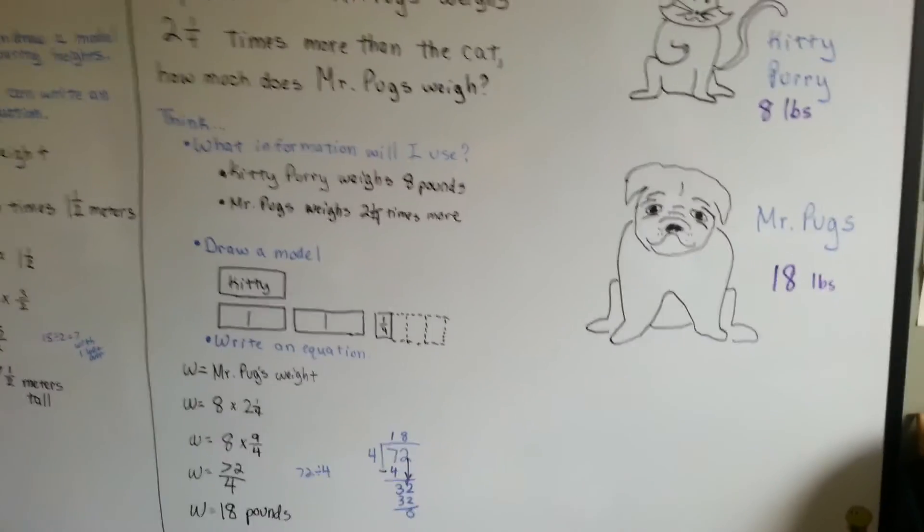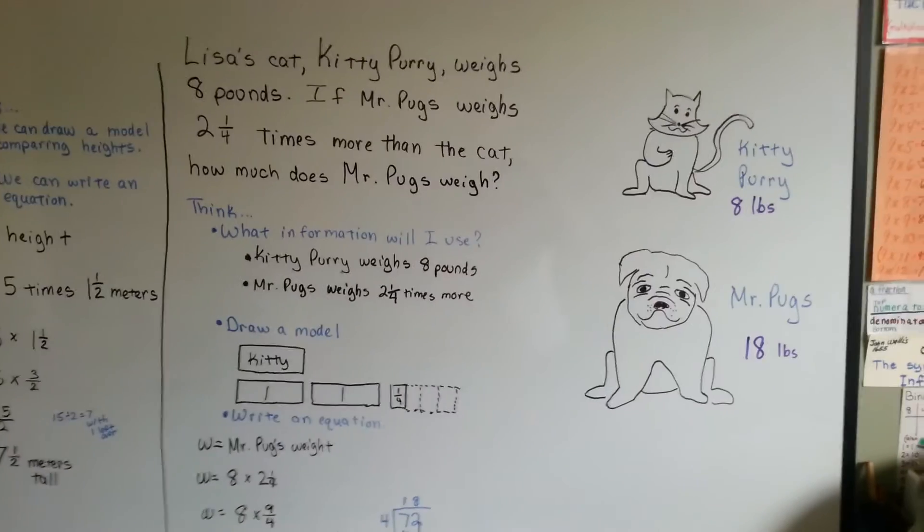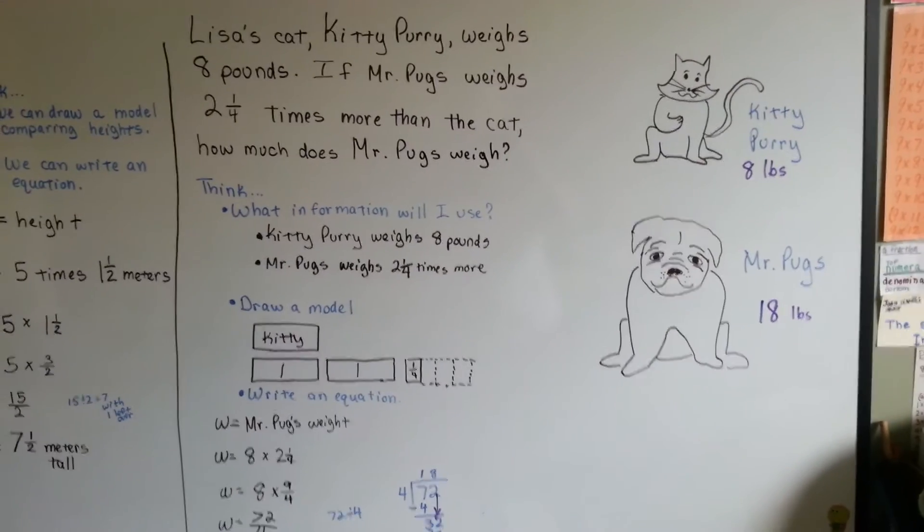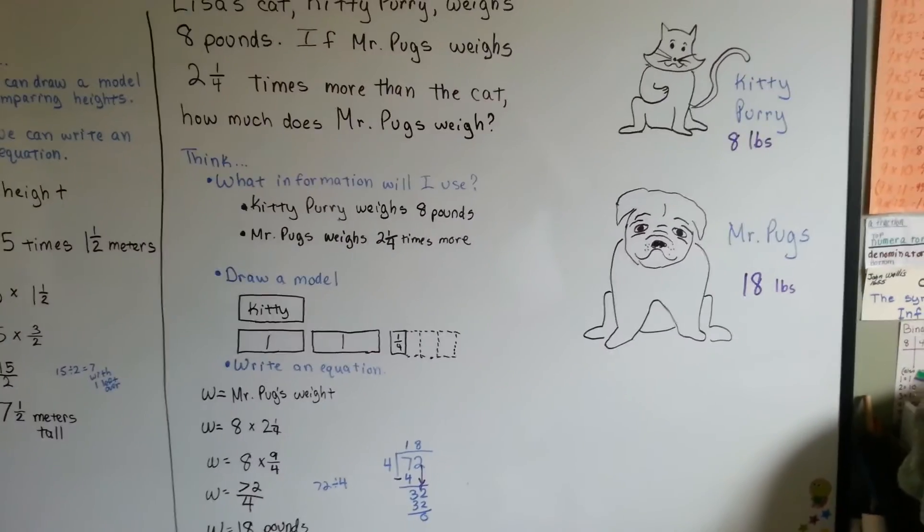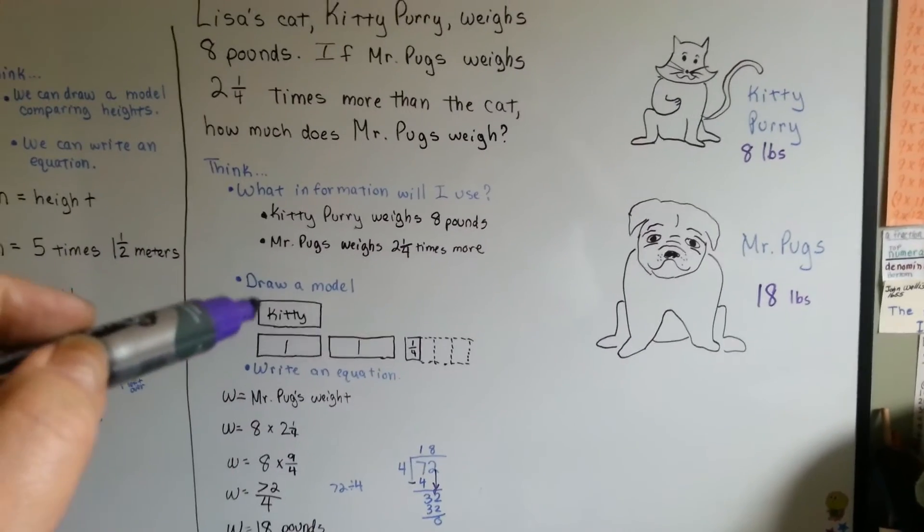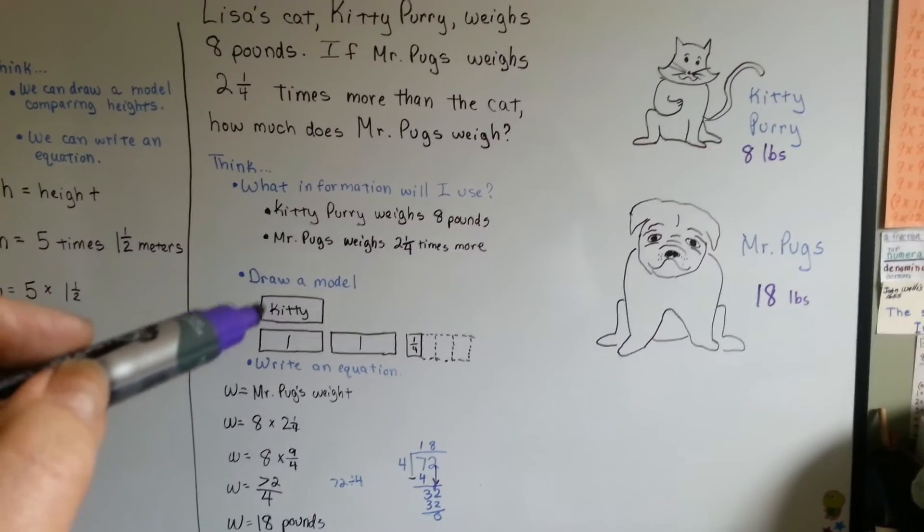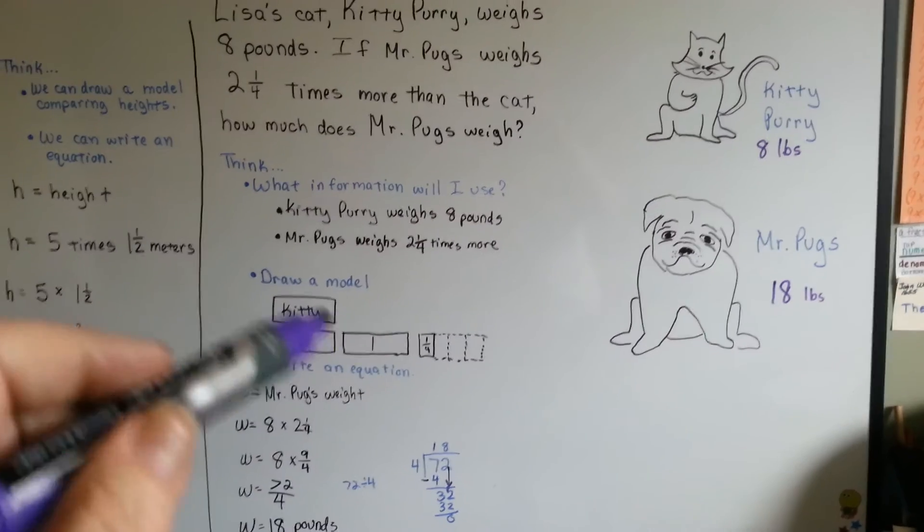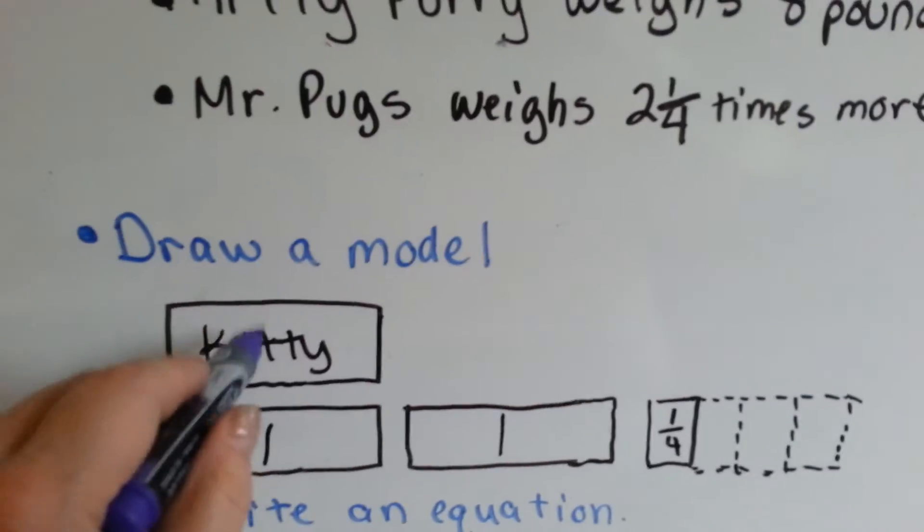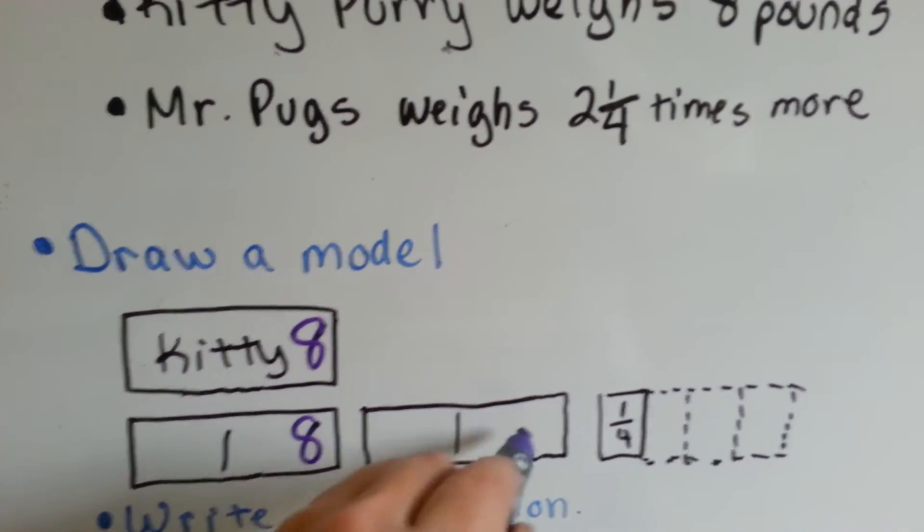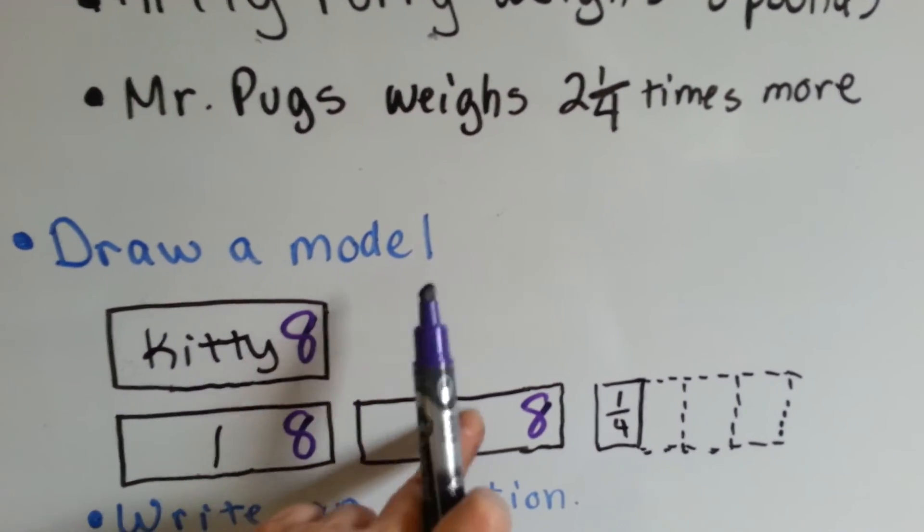So we used the weight of one animal as a comparison of the other animal. We used Kitty's weight as a measuring guide. We probably could have even answered it if we went with just the models. Because if Kitty is this one and weighs eight pounds, that means each one of these is eight pounds.